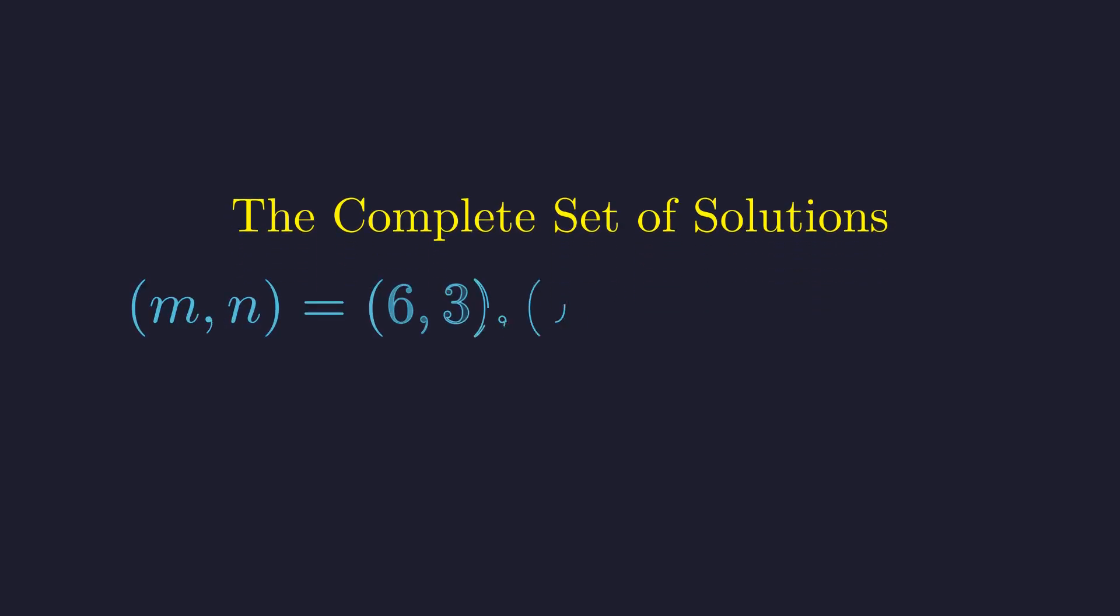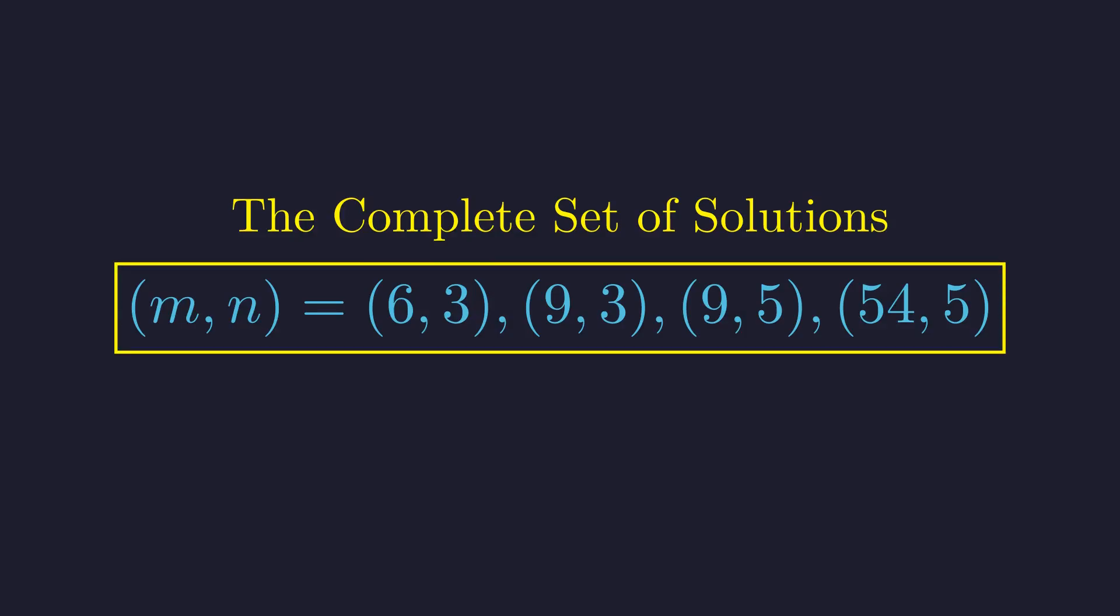This analysis, beginning with a quadratic formulation and proceeding through the discriminant and a difference of squares, has yielded the complete set of solutions. There are precisely four pairs of non-negative integers that satisfy the initial equation. The problem illustrates how an equation with a simple appearance can contain a rich number-theoretic structure, which can be unraveled through systematic deduction. Thank you for joining us for this problem. If you found this analysis interesting, please consider subscribing for more content.